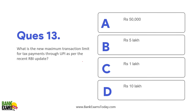What is the new maximum transaction limit for tax payment through UPI? As per the recent RBI guidelines, the limit has been increased to 5 lakh rupees.